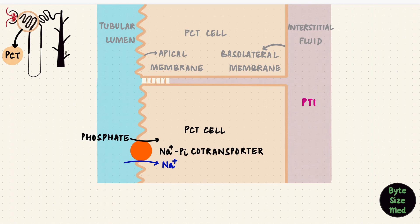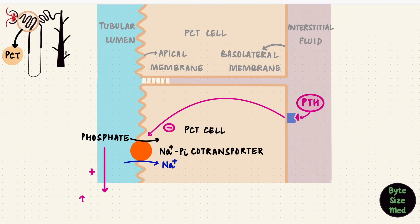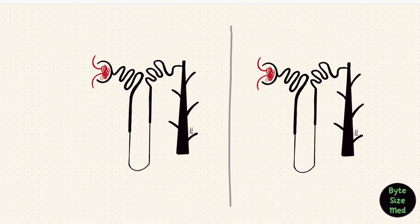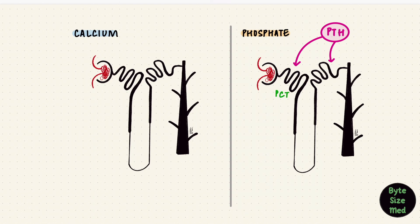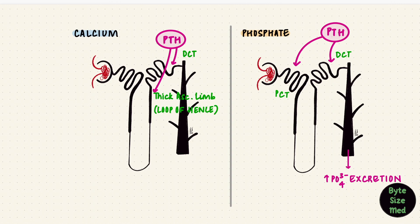Phosphate reabsorption and excretion is also regulated by PTH, but the effect is the opposite to calcium. PTH removes these sodium-phosphate co-transporters, so phosphate reabsorption reduces, meaning PTH increases phosphate excretion. It does this again using cyclic AMP as a second messenger. But for phosphate, PTH works on the proximal tubule, unlike with calcium. So PTH changes both calcium and phosphate: for phosphate, PTH acts on the proximal and distal tubule, reducing phosphate reabsorption and increasing its excretion; while for calcium, PTH acts on the loop of Henle and the distal tubule, increasing calcium reabsorption and reducing its excretion.